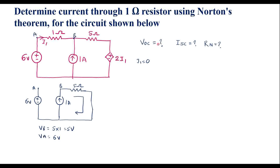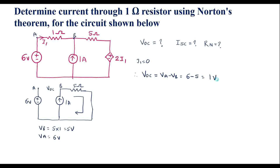Now we calculate VOC, the open circuit voltage — that is the voltage between point A and point B. VOC = VA − VB = 6 − 5 = 1 volt. So the VOC value is 1 volt.